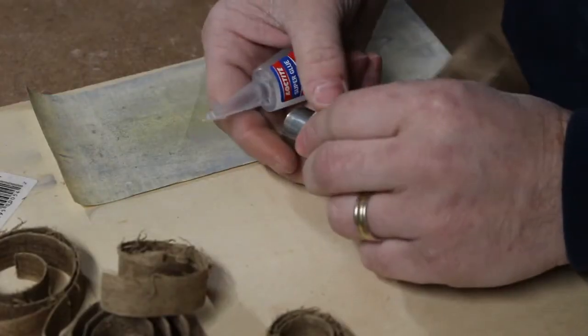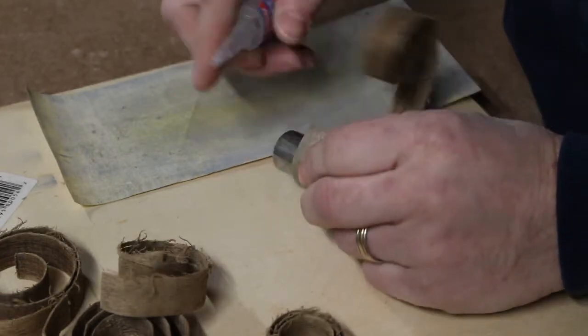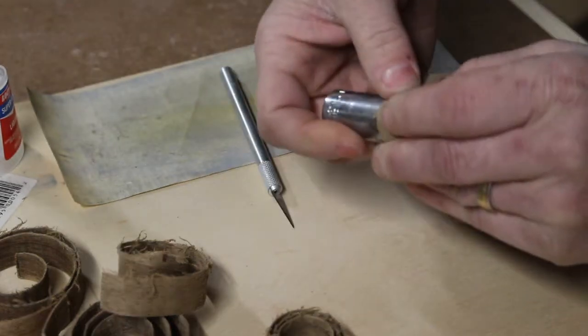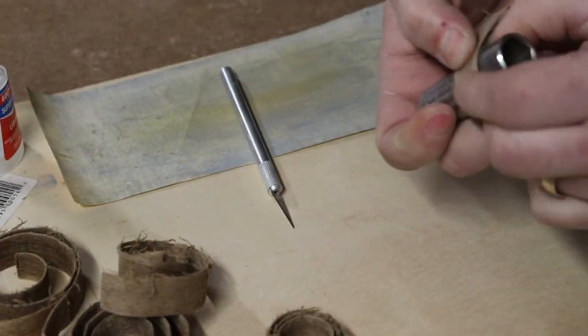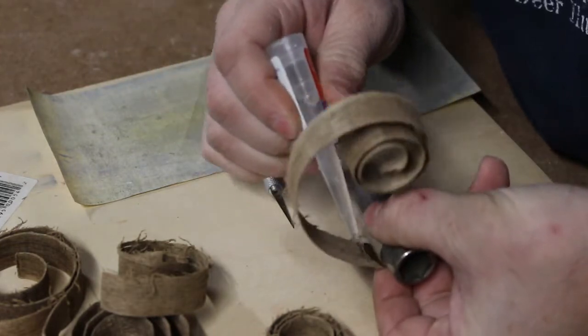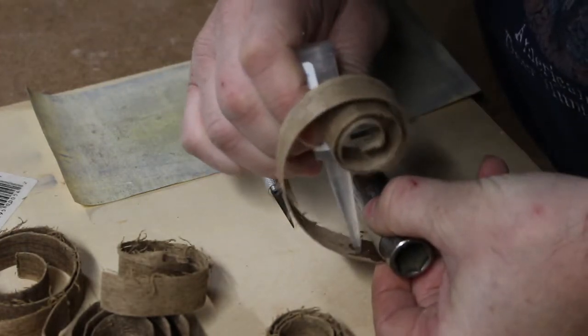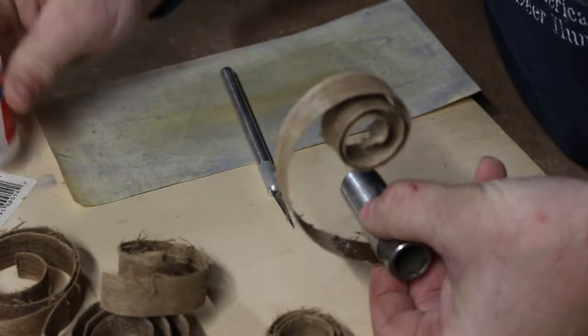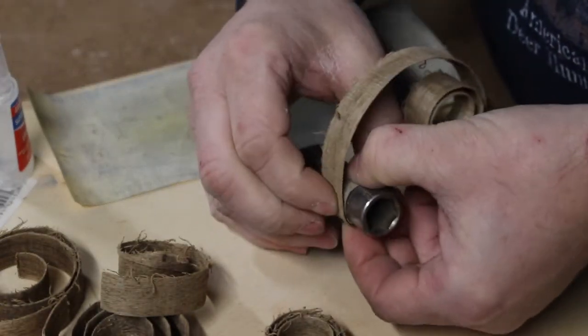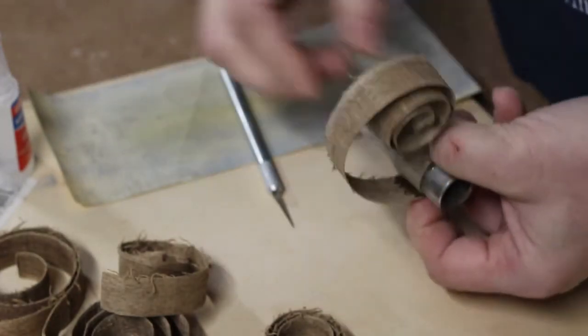You will want to find the lowest viscosity CA glue that you can find. I don't recommend using the gel type since it doesn't soak into the wood fibers very well. I think you could probably get away with it, but I didn't want to chance it, so I found a nice liquidy one. Now moving just a little bit at a time, I would add glue and then roll the veneer onto the socket and the previous layers of the ring.